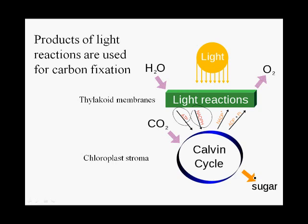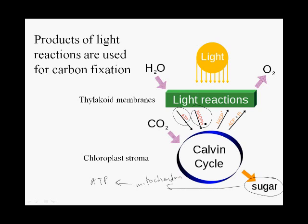What then happens is that the products of the Calvin cycle are used to make sugar. Then sugar is burned by the plant cells' mitochondria to make ATP to drive all of the cellular work outside the chloroplast. The Calvin cycle, by using up the ATP and NADPH, returns NADP+ and adenosine diphosphate for further recycling in the light reactions.